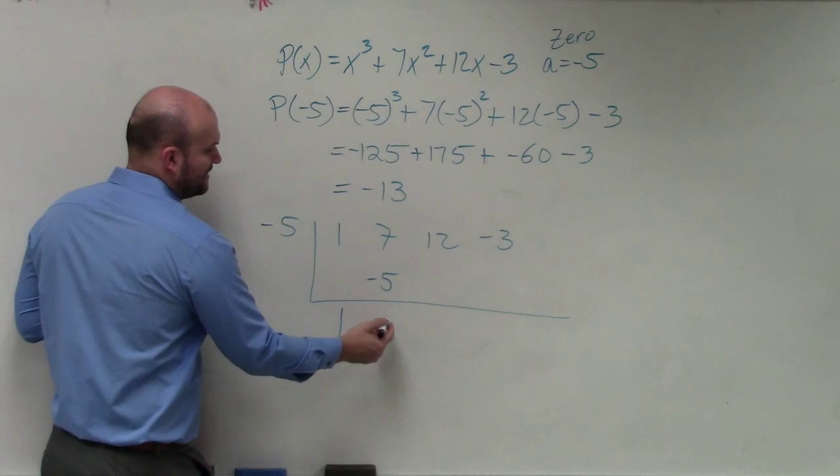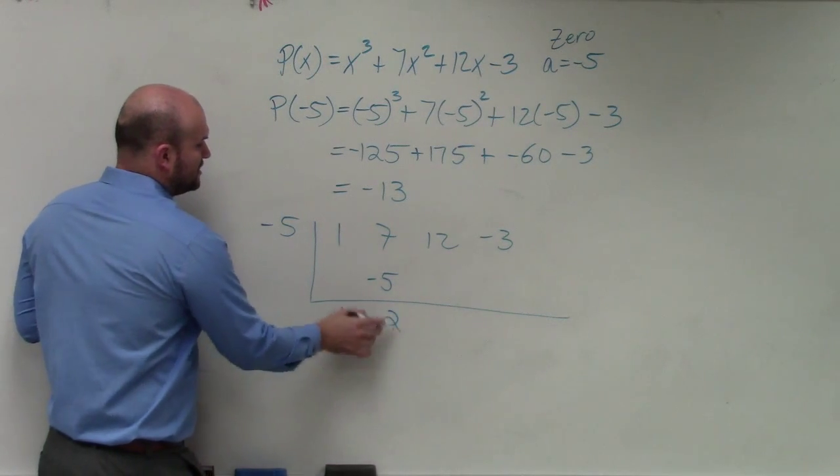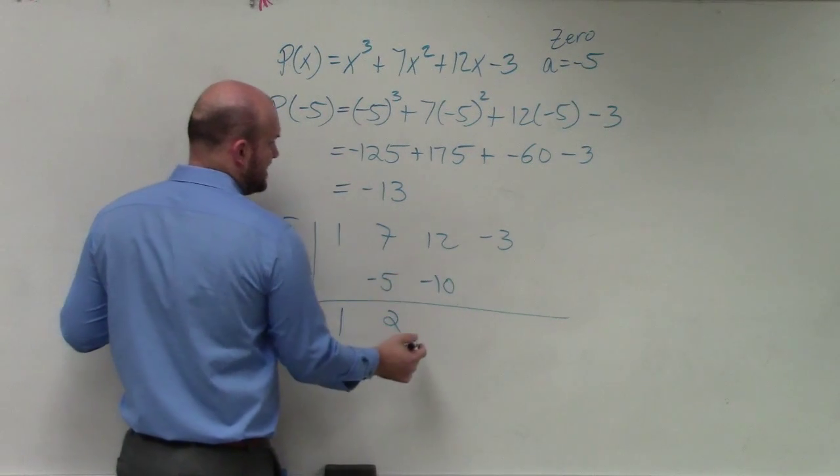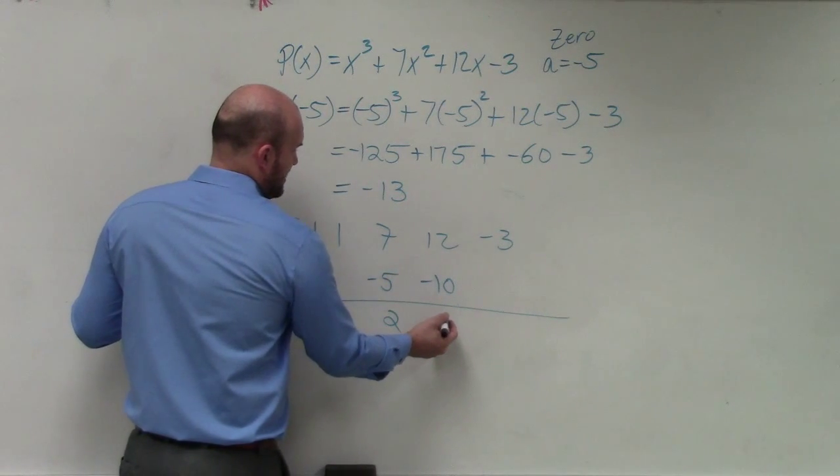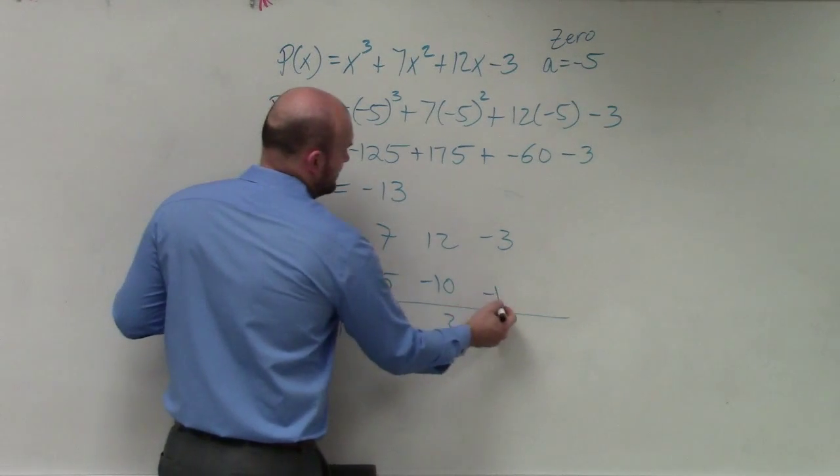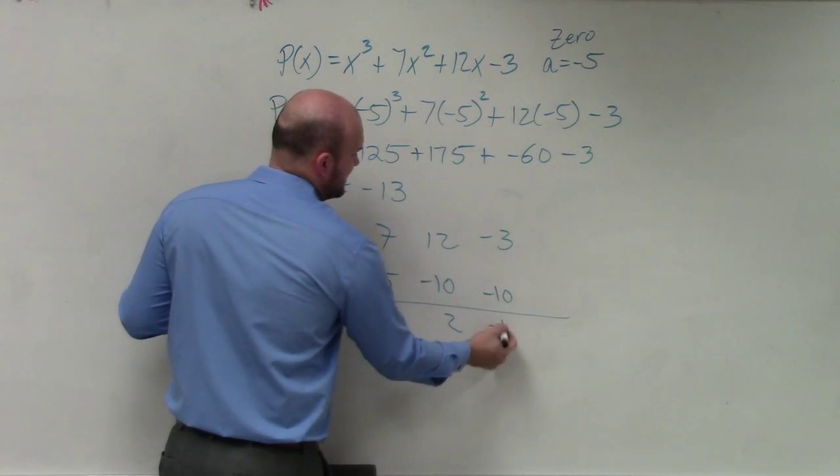7 plus negative 5 is positive 2. 2 times negative 5 is negative 10. 12 plus negative 10 is positive 2. 2 times negative 5 is negative 10, negative 3 plus negative 10 is negative 13.